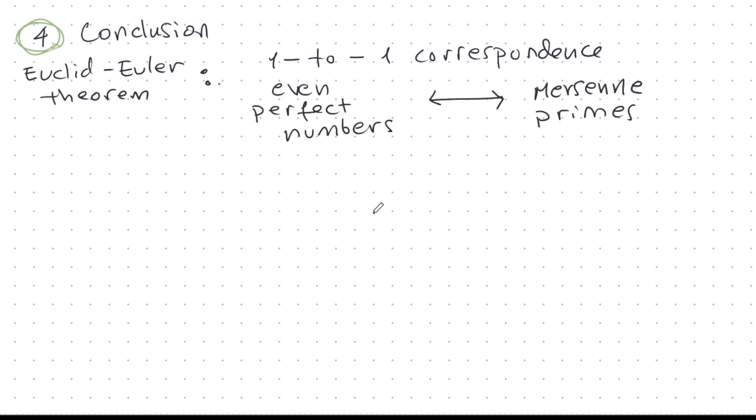Now for some concluding thoughts. The Euclid-Euler theorem that we just proved shows there's a one-to-one correspondence between the even perfect numbers and the Mersenne primes. So this leads to some interesting questions. How many perfect numbers are there? And notice that because it's a one-to-one correspondence, it's like asking how many Mersenne primes are there? And here I've got to restrict myself to the even perfect numbers because that's what we proved.